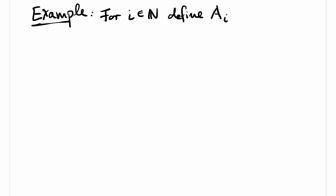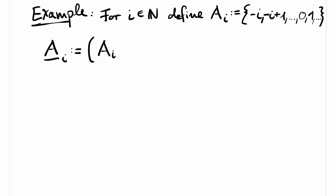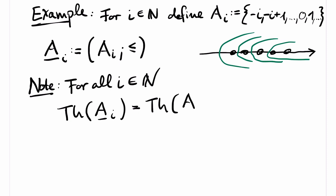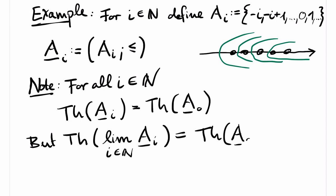We have to look at an example. The example I will show you is quite instructive; it will show up two times in this video. Let A_i be the structure with domain {-i, -i+1, -i+2, ...}, so all integers that are larger than -i, -i included. There is only one binary relation in our structure, namely the usual ordering on the integers. Note that for every i, the first-order theory of A_i equals the first-order theory of A_0, so all the structures in the chain satisfy exactly the same first-order sentences. The reason is that all the structures are even isomorphic. However, the first-order theory of the limit of the chain has a different first-order theory, because in the limit there is no smallest element, which is a property that can be expressed by a first-order sentence.